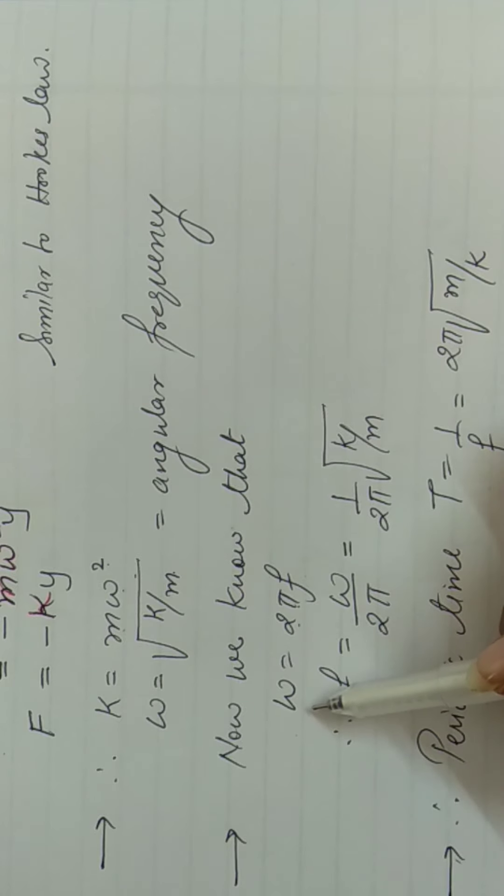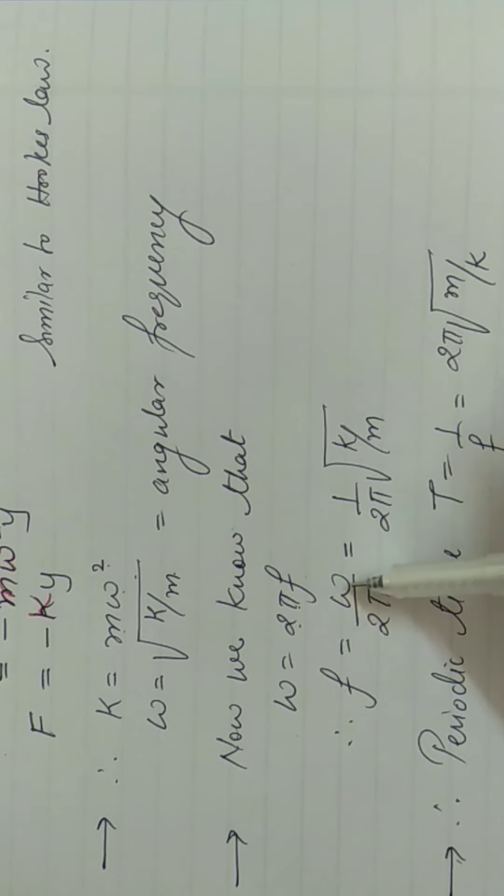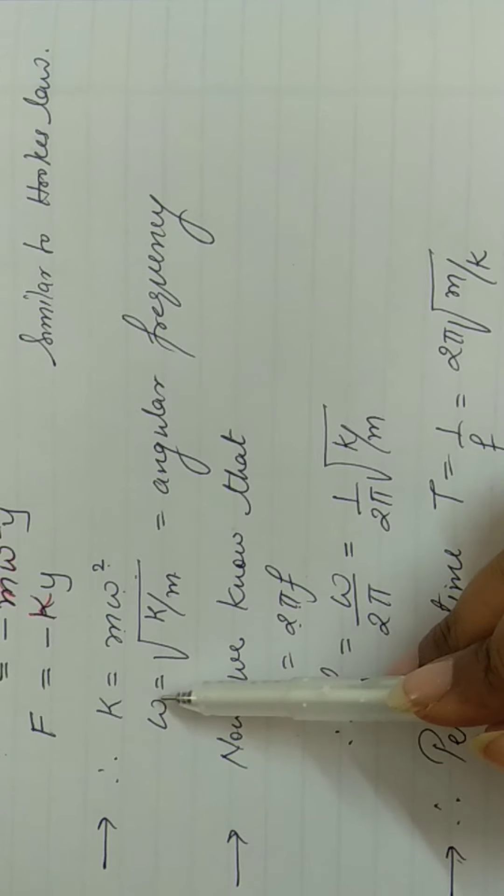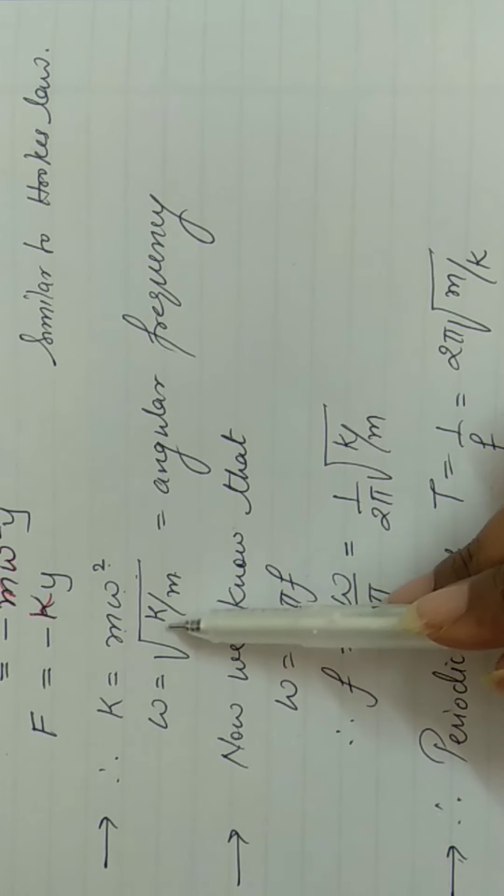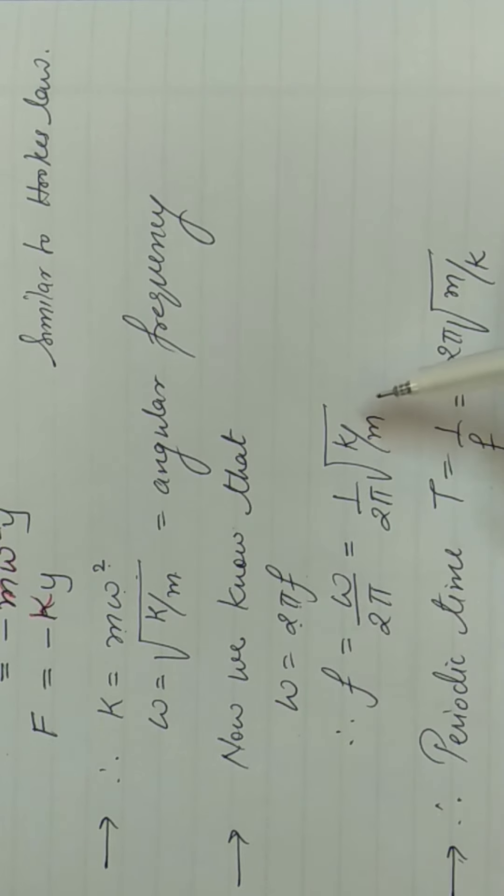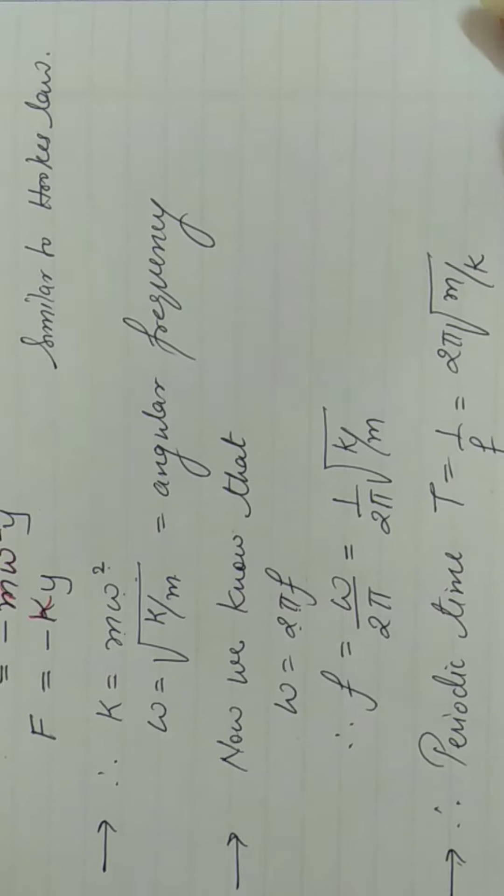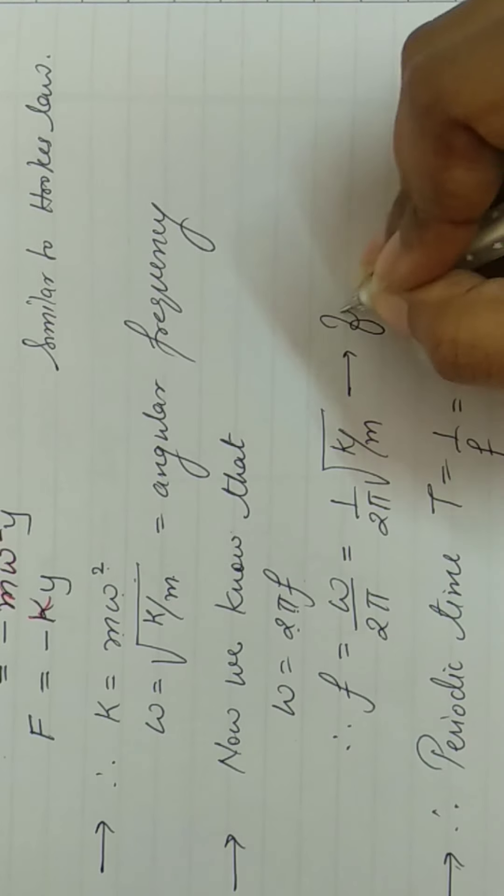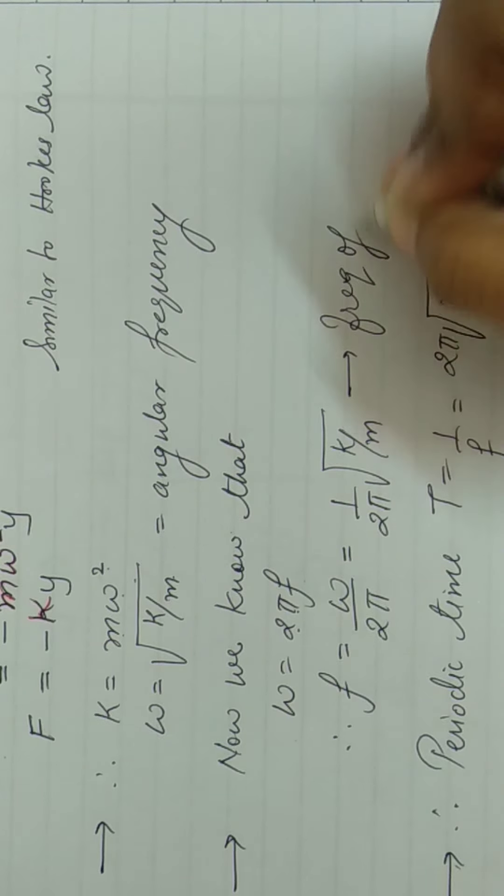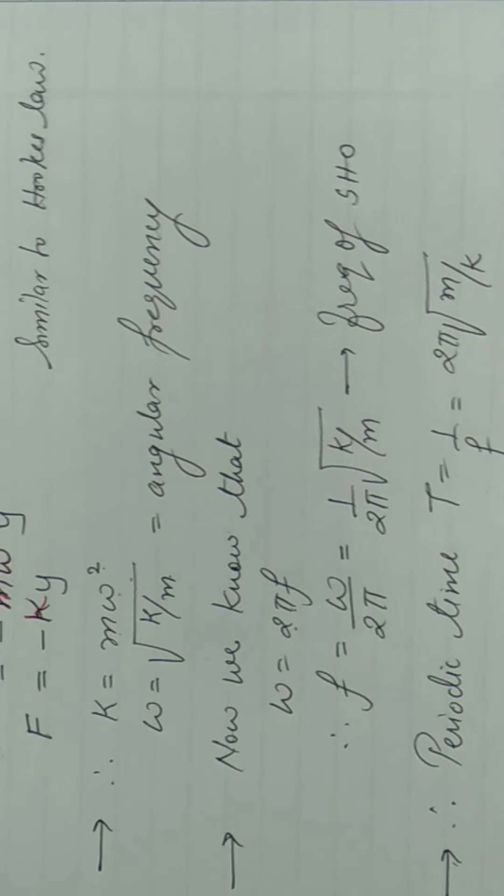But omega ki value toh ham yaha obtain kar chukke hai. So omega is equals to root k by M. So 1 upon 2π as it is and instead of this omega, we are writing root k by M. Toh ye frequency ka equation mil jata hai. So this is actually frequency of simple harmonic oscillator.